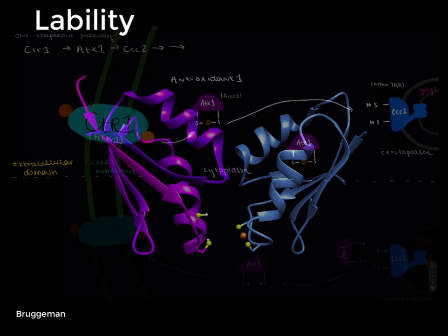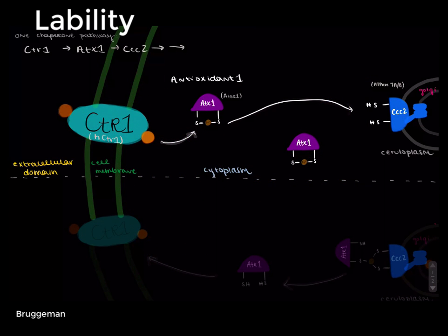Finally, the lability of the copper 1 reduces the energy cost of transport from ATX1 to CCC2. When a metal ion is labile, this means that it reacts at a high kinetic rate and may readily replace ligands in coordination complexes.